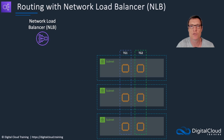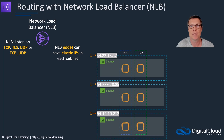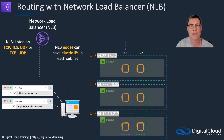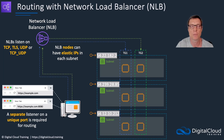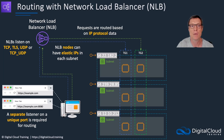Next we have the network load balancer. With two target groups and an NLB, we can assign elastic IPs in each subnet the load balancer is connected to. NLBs listen on TCP, TLS, UDP, or TCP_UDP. The NLB does not support the advanced request routing that the ALB does, but you can create multiple listeners and listen on different ports — a separate listener on a unique port can forward requests for a specific application to a different target group. You could do that on an ALB as well. Note that you can only have one listener per load balancer per individual port number. Requests are routed based on the IP protocol data — specifically the port number being connected to. Targets can be EC2 instances, IP addresses, or ALBs.